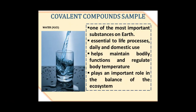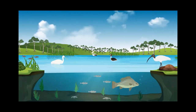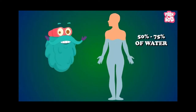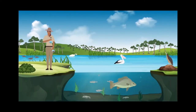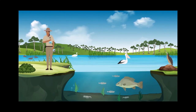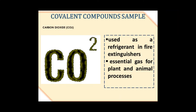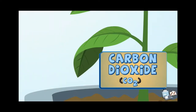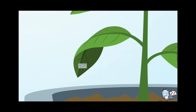Water is one of the most important substances on Earth. It is essential to life processes, daily and domestic use. Our body needs water. It helps maintain bodily functions and regulate body temperature. In addition, water plays an important role in the balance of the ecosystem. Carbon dioxide is used as a refrigerant in fire extinguishers. It is also an essential gas for plant and animal processes like photosynthesis and respiration.